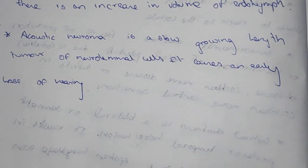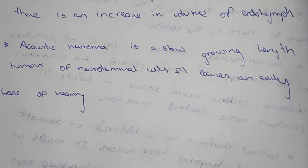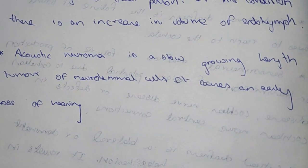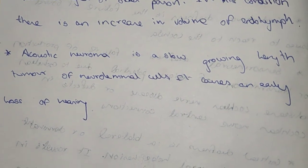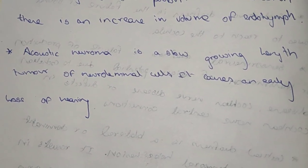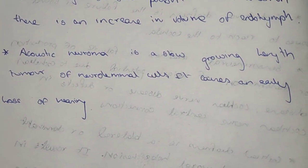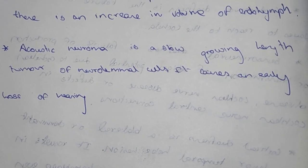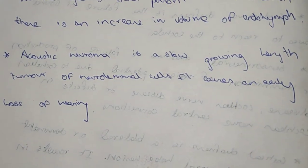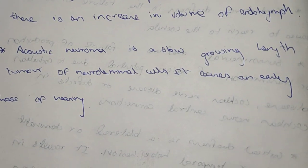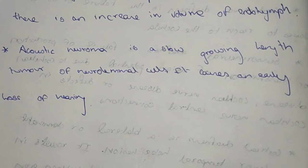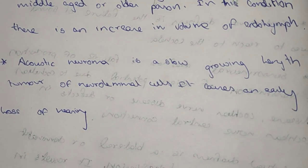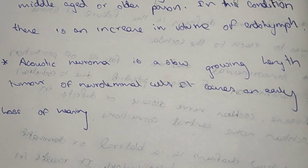Acoustic neuroma is a slow-growing benign tumor of the neural cells. It causes early loss of hearing due to the growing tumor. That's all about the applied anatomy of the eighth cranial nerve.